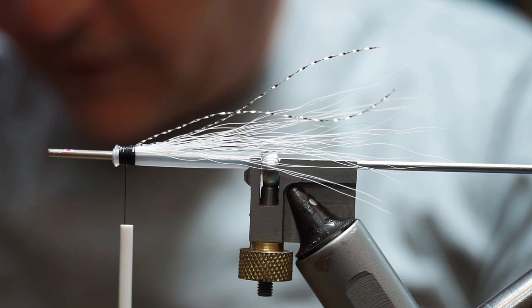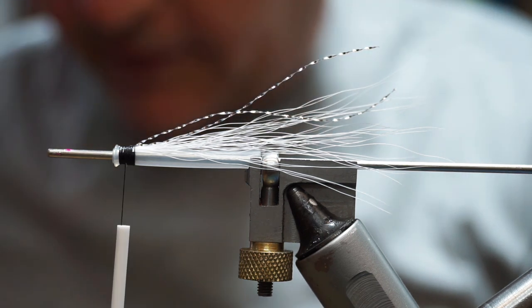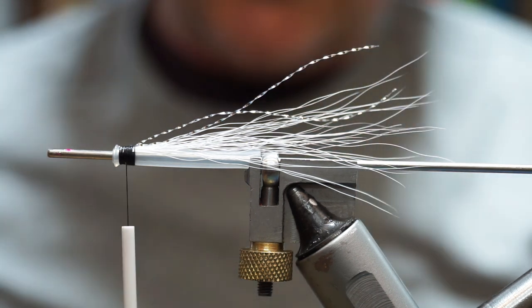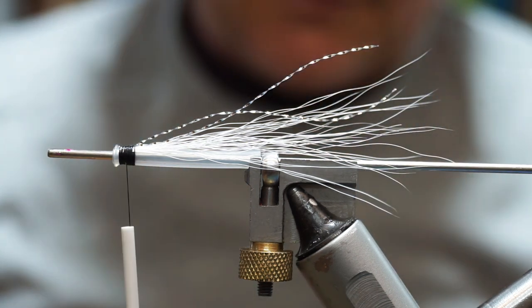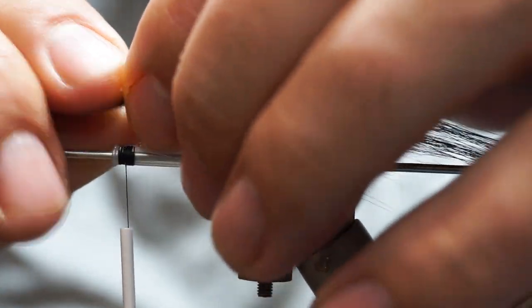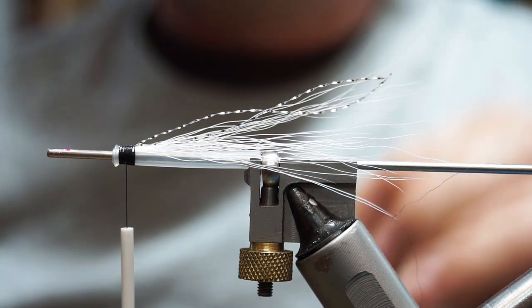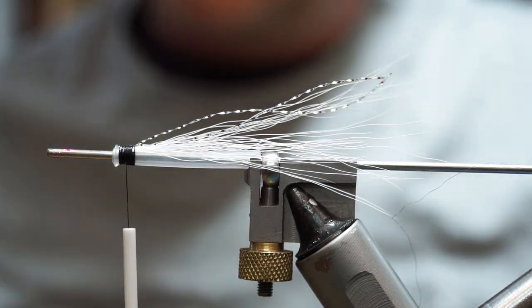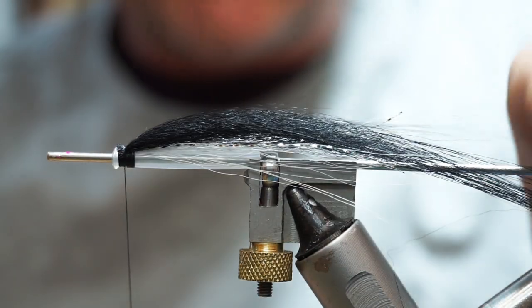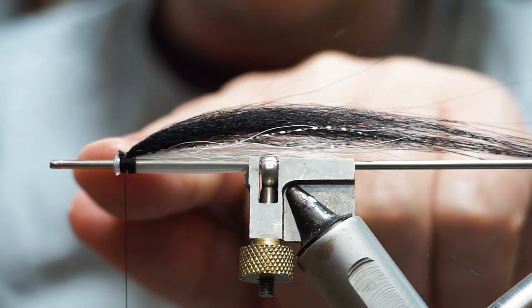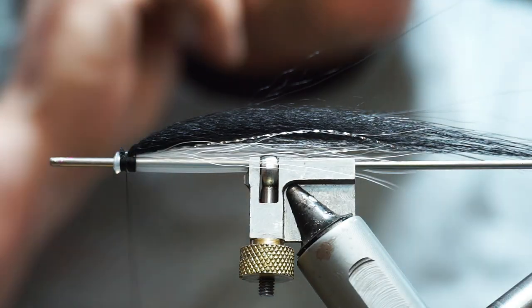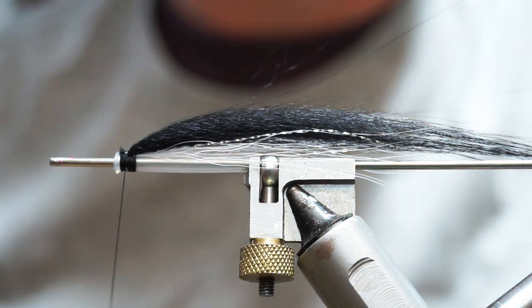So I'm just going to take that, I'm going to set it up on top, swap hands, trim that off. And the same trick as we did before, I'm just going to have the cut end up to the back of the flange of the eye.